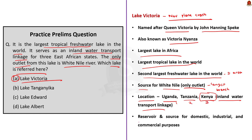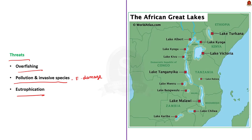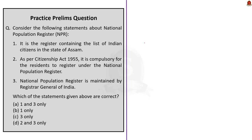Lake Victoria serves as a major reservoir and source of water for domestic, industrial and commercial purposes. But it faces many threats: overfishing, ecological damage from pollution and invasive species, and eutrophication. As a study tip, try arranging the African Great Lakes in north-south or south-north direction — it will be useful for prelims.